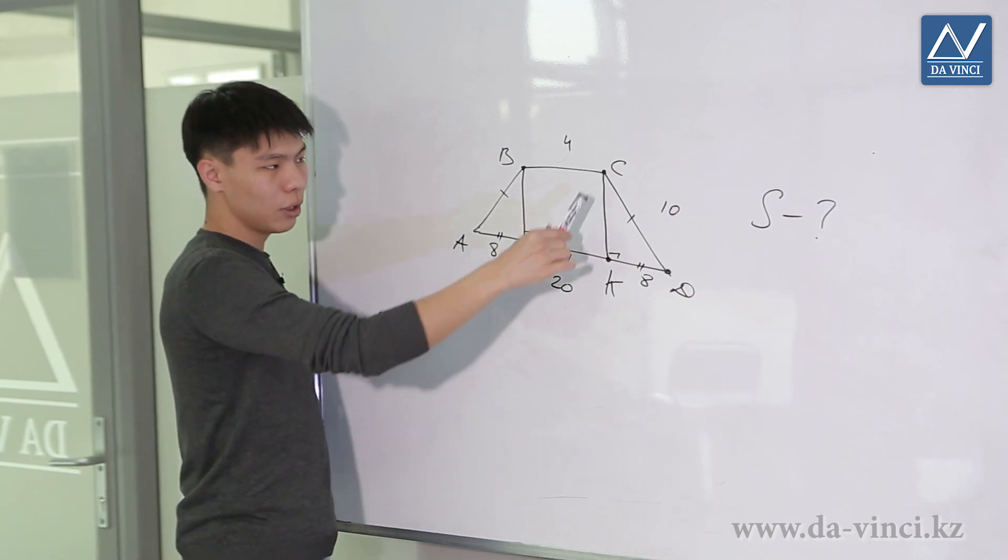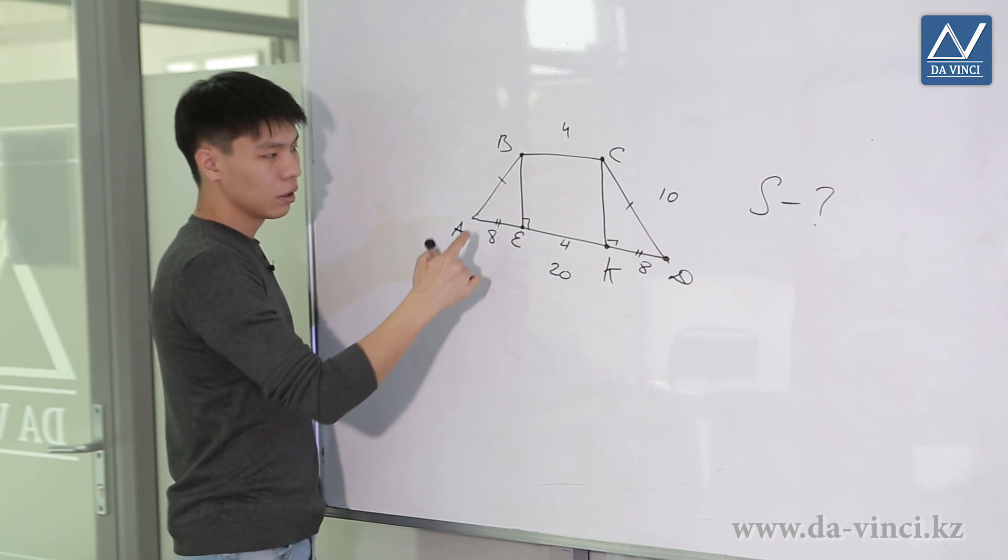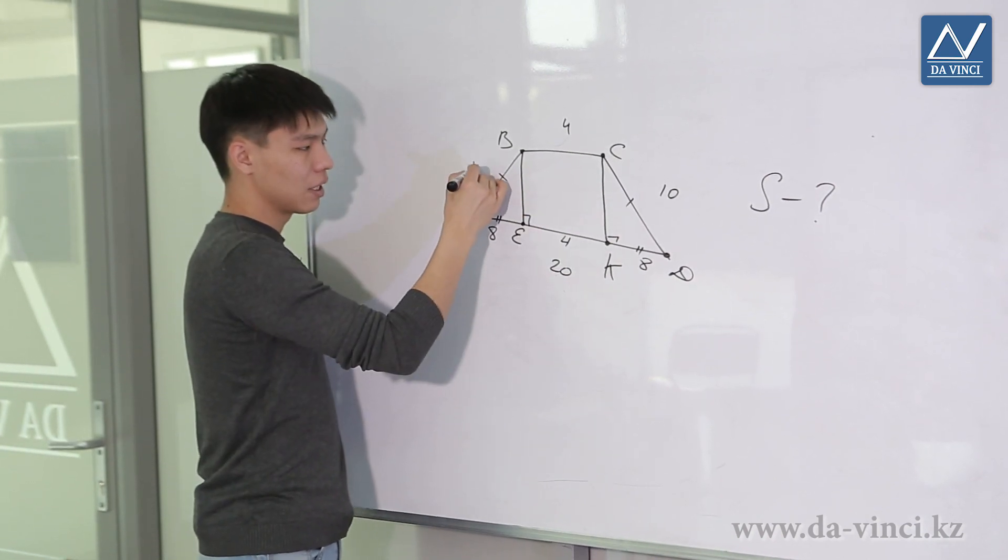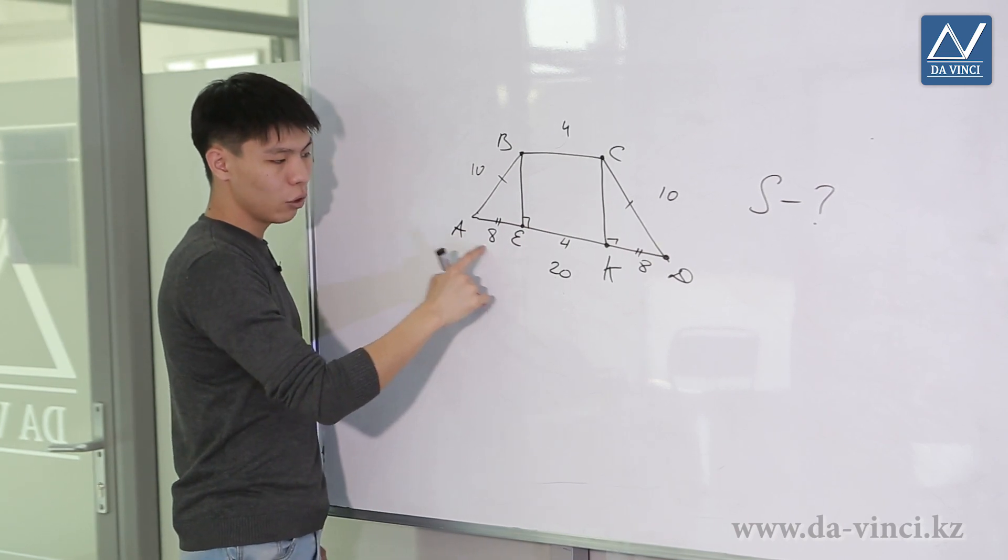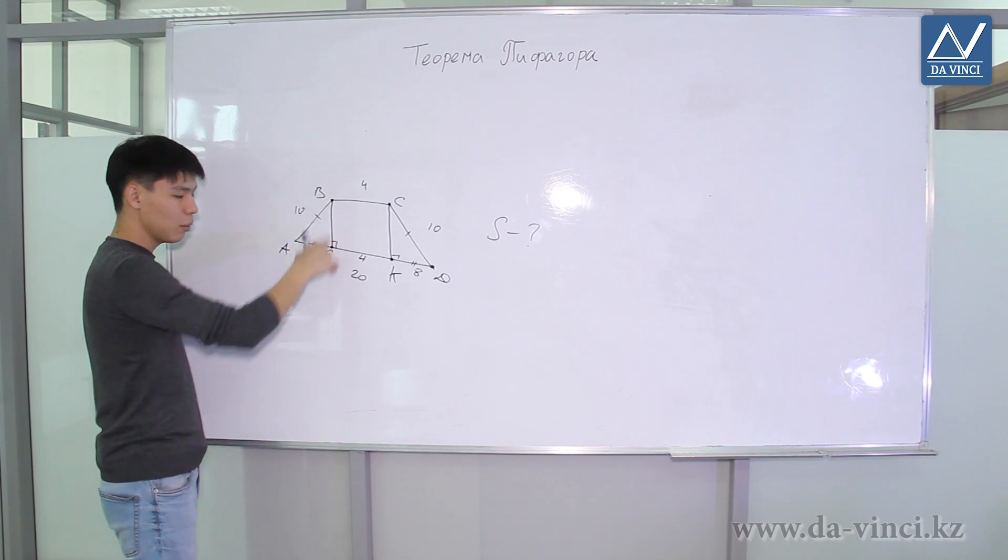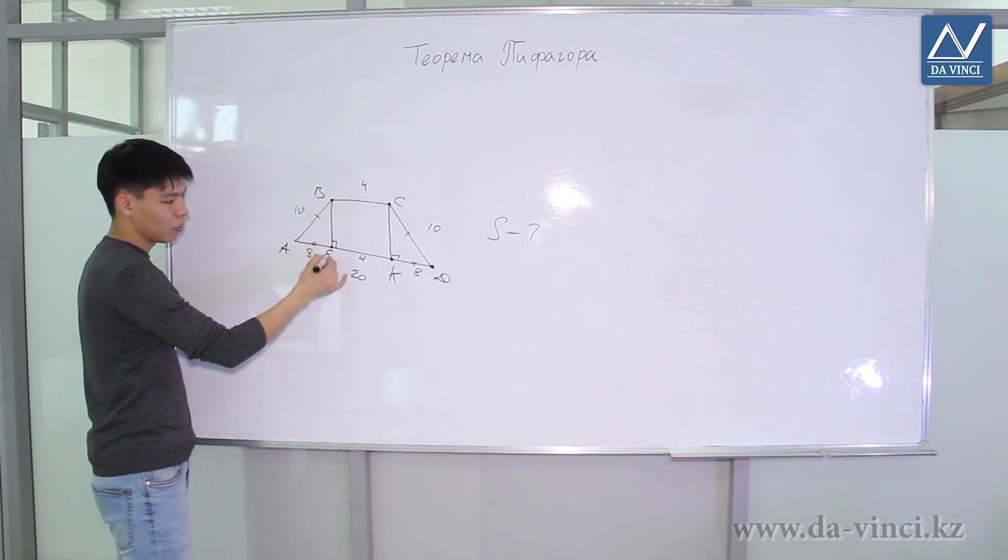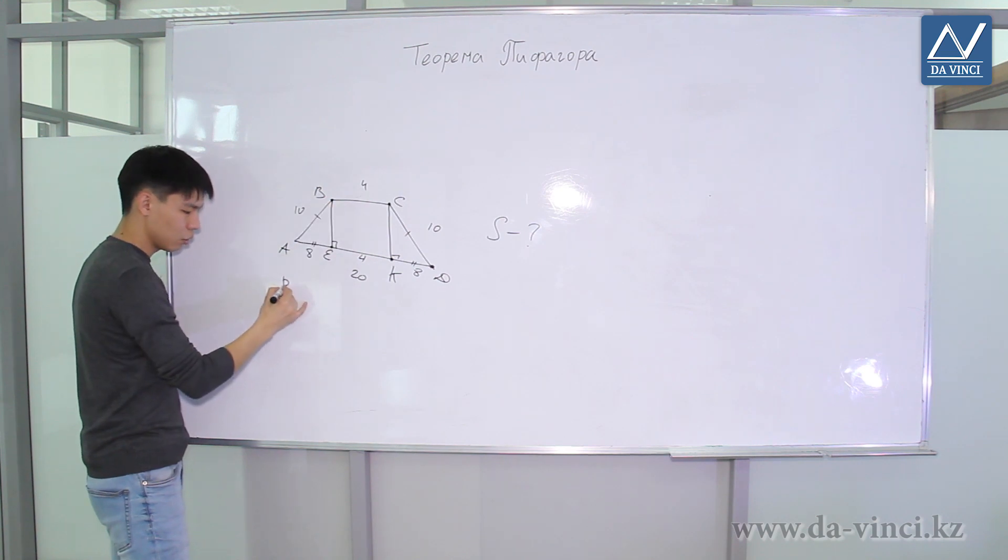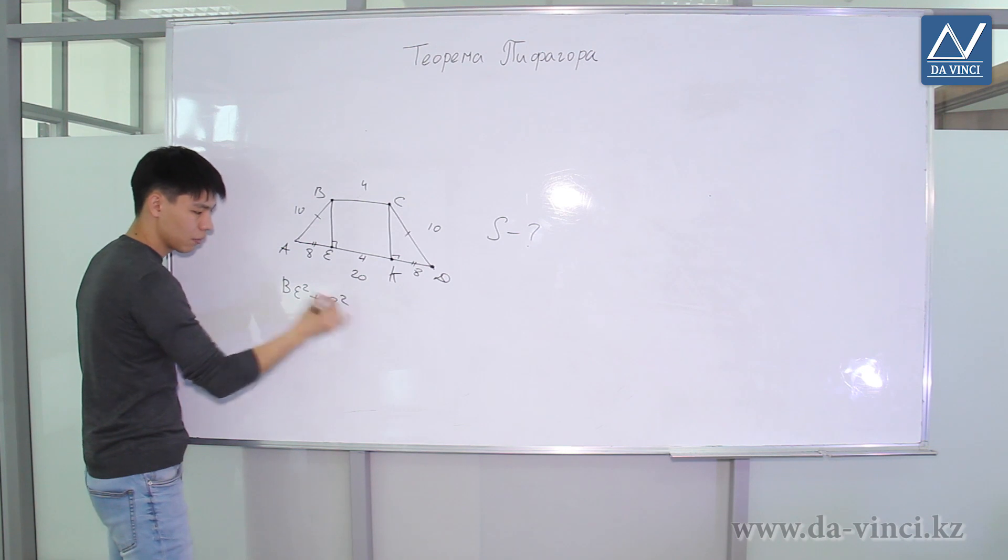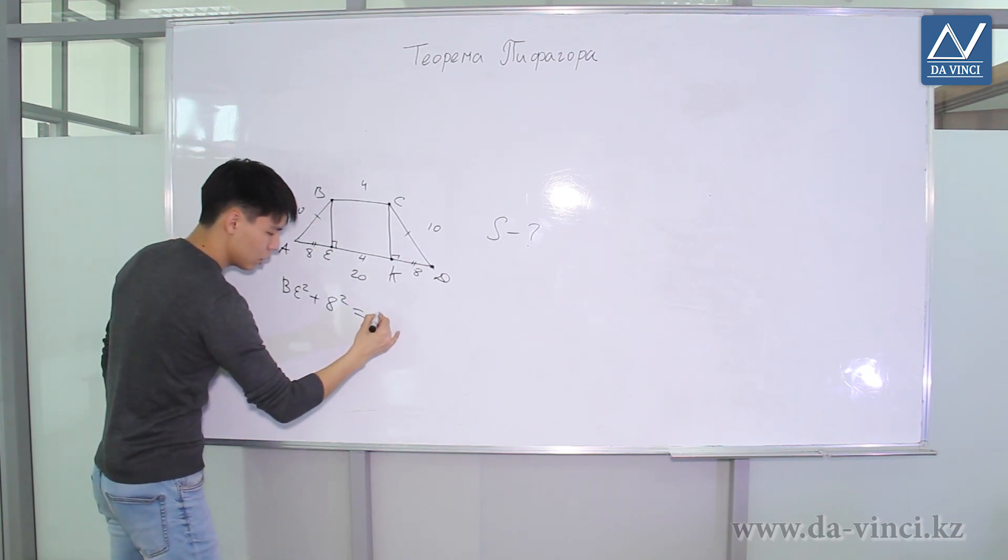Now we should consider one of the triangles, for example, ABE. It is rectangular and the hypotenuse is equal to 10. One of the legs is equal to 8. We can use the Pythagorean theorem to find BE. According to the Pythagorean theorem, the sum of the squares of the legs, that is BE squared plus AE squared, and we have 8 squared, equals AB squared, that is 10 squared.